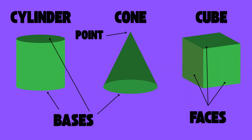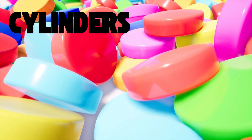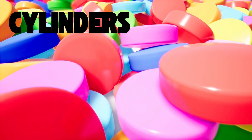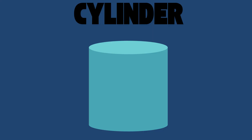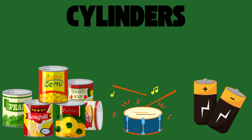If you find circles face at the bottom and top with one curved surface, then a cylinder you've got. A bottle of shampoo or a soup can, a battery, a drum or a crayon.